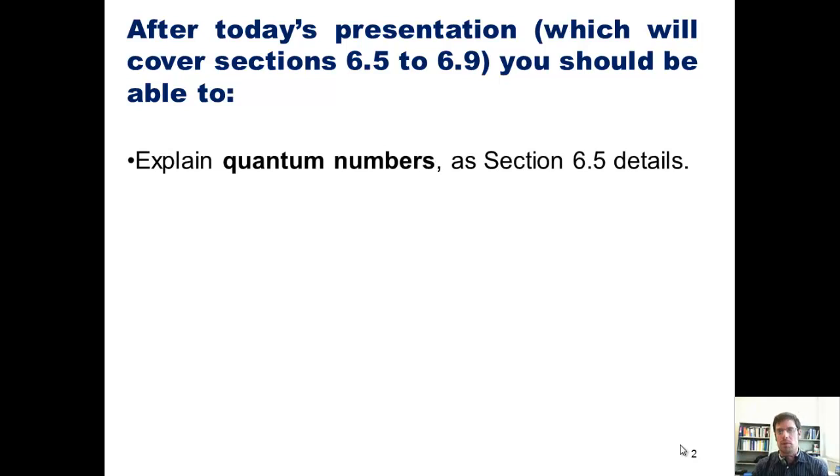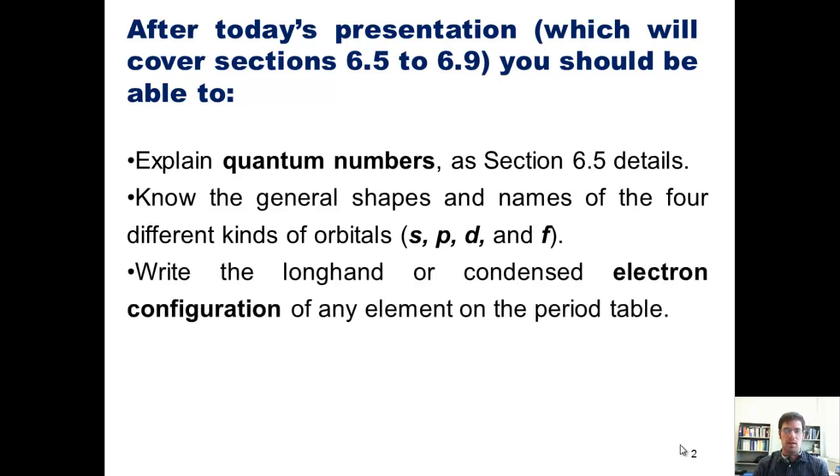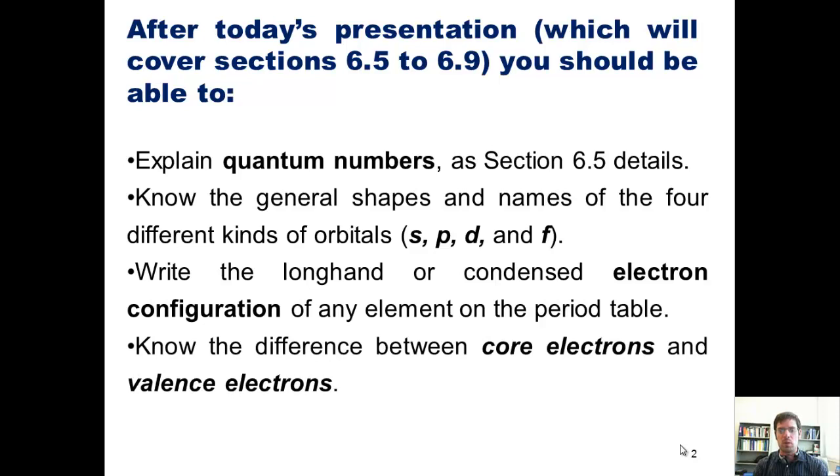First, explain quantum numbers, as detailed in Section 6.5. Second, know the general shapes and names of the four different kinds of orbitals. Third, write the longhand or condensed electron configuration of any element on the periodic table. And fourth, know the difference between core electrons and valence electrons.